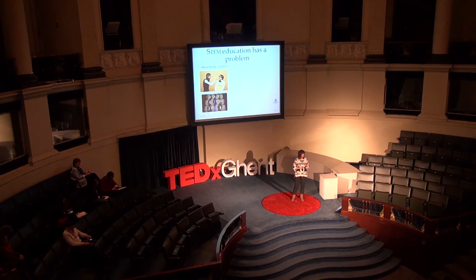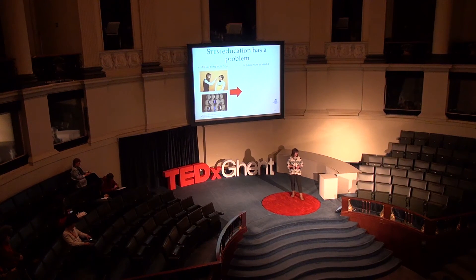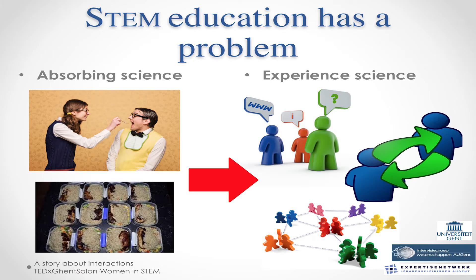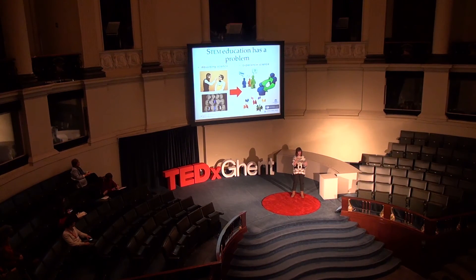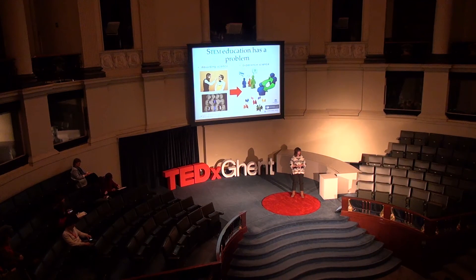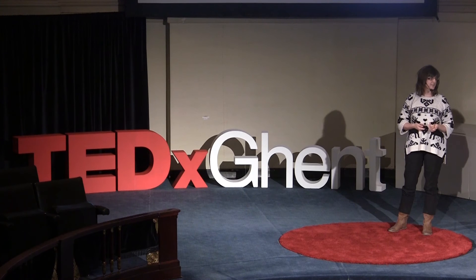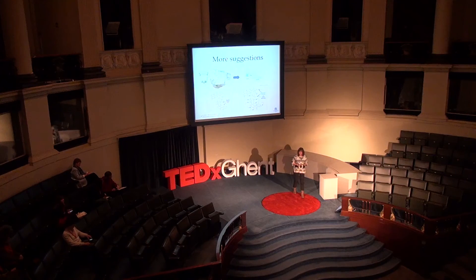We think it is better, rather than just giving lectures where pupils absorb science, to go to a system where pupils are more experiencing science — meaning that you show them a problem, and then by interacting with their fellow students and with the teacher, they start to think and can see the relevance of what is being taught. Maybe we can show the links between chemistry and biology, chemistry and physics, chemistry and history, chemistry and society. When they see all these interactions, then maybe they see the relevance of what we are teaching them at school.